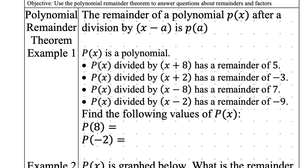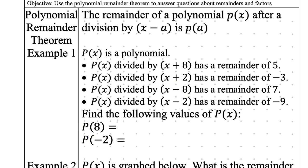Example number one: p of x is a polynomial. p of x divided by x plus 8 has a remainder of 5. So if I plug in 8, which linear factor am I really dividing by — x plus 8 or x minus 8? p of 8 is the same as x minus 8. So this p of 8 is talking about when I divide by x minus 8, which means the remainder is 7. When I divide by x minus 8, I have a remainder of 7. The value at x equals 8 gives a y value of 7. Or another way of saying this is, when I divide by x minus 8, I have a remainder of 7. That's saying the same thing according to the Polynomial Remainder Theorem.